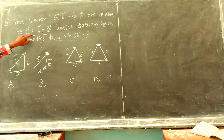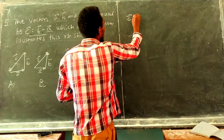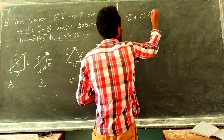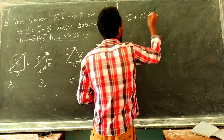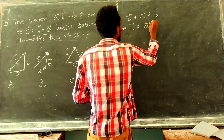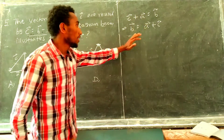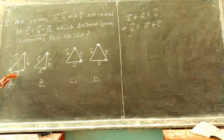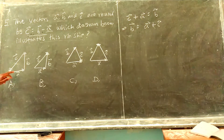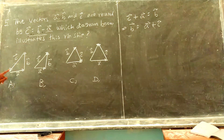This is C plus A, which is equal to vector B. This implies vector B minus A equals vector C. This is the relationship between A, B and C. When two vectors are added, the result is drawn from the tail of one to the head of the other.